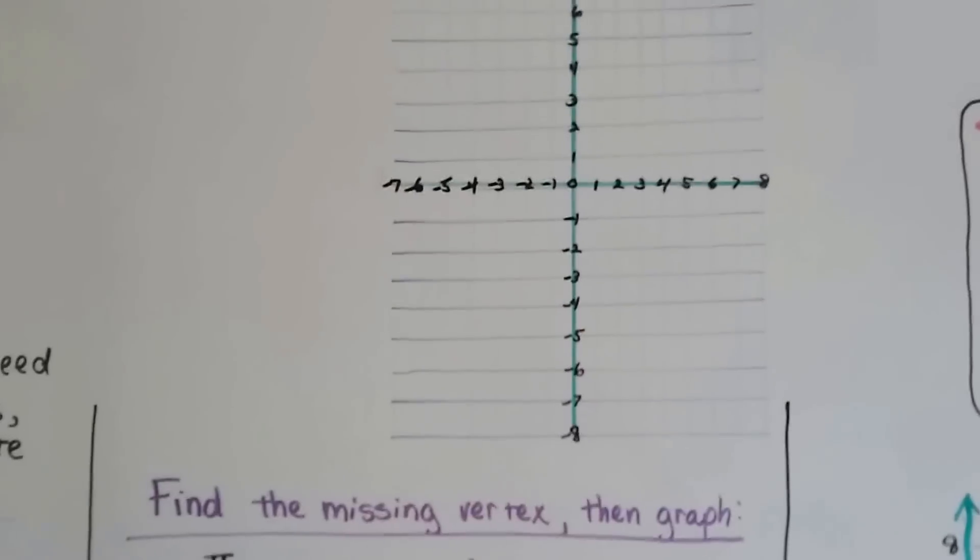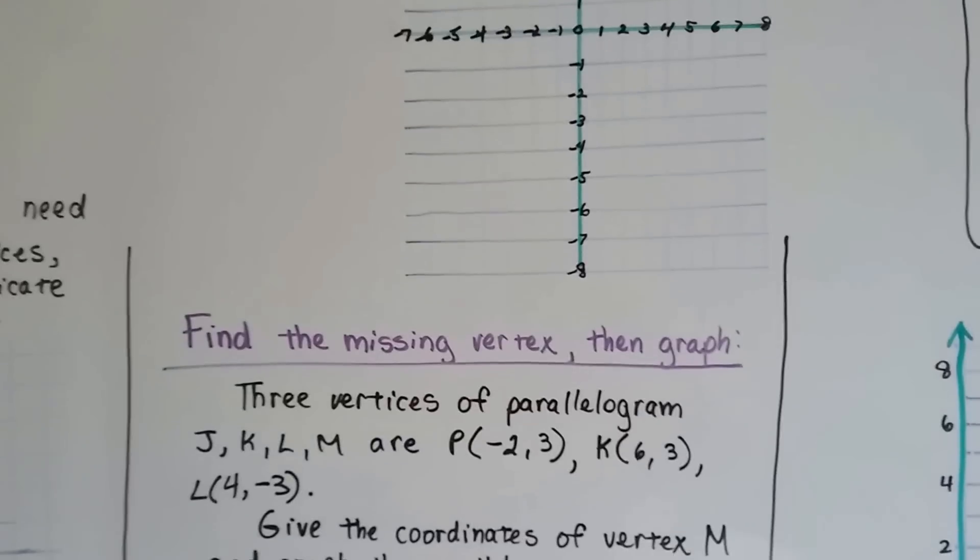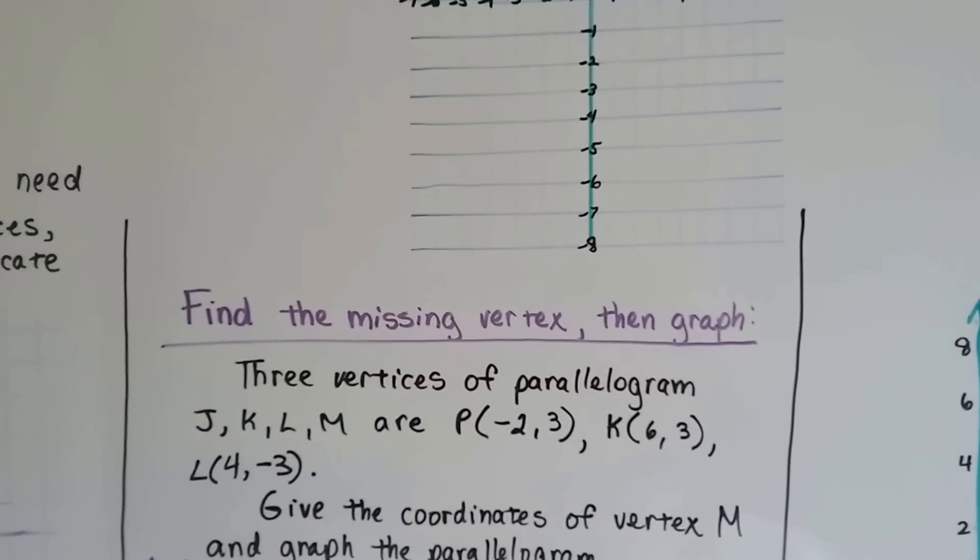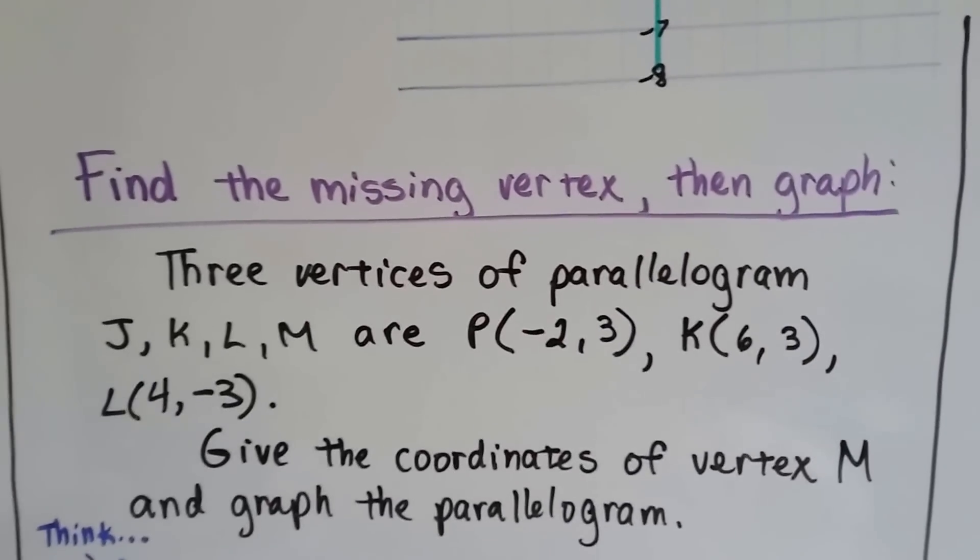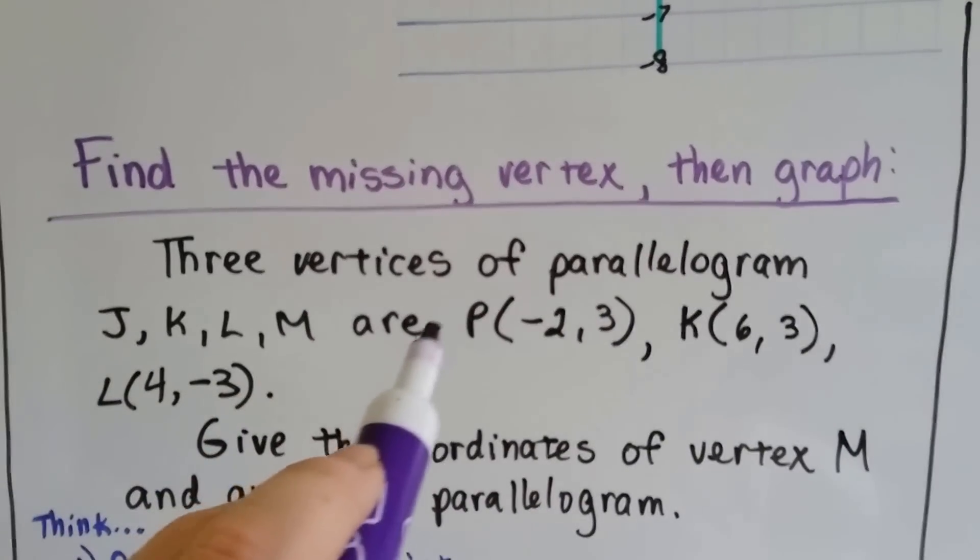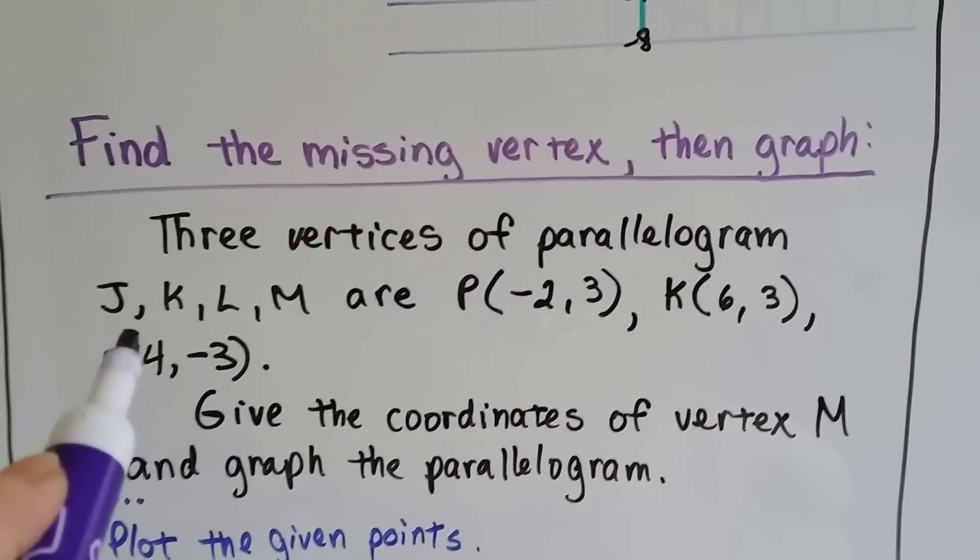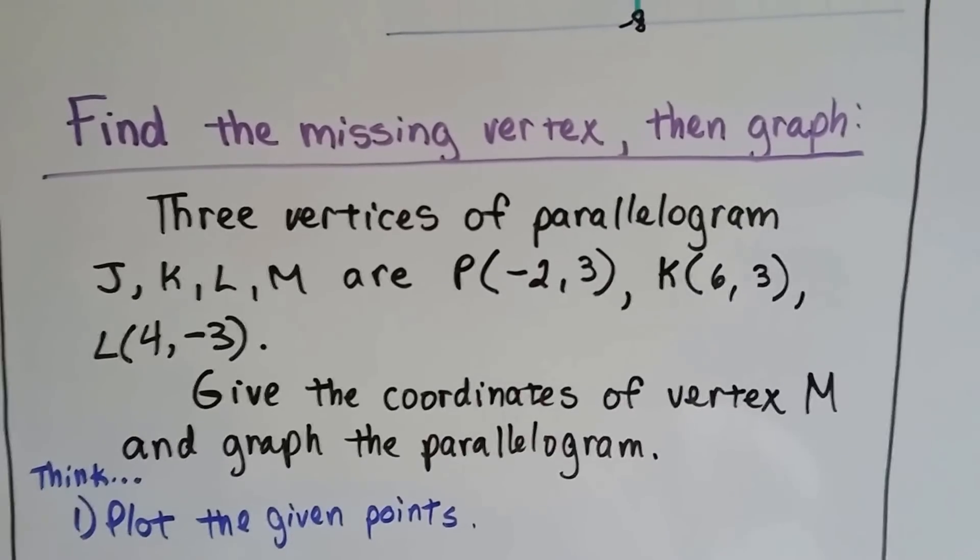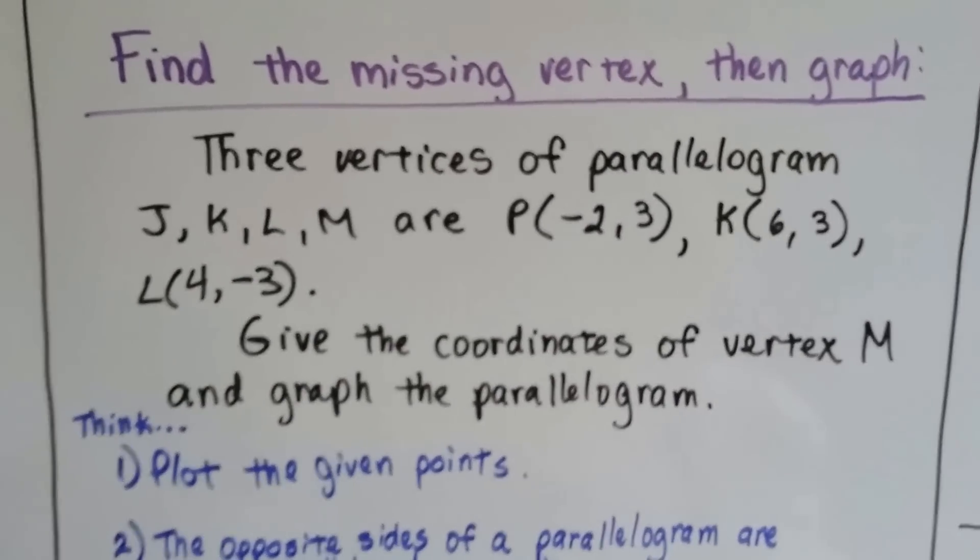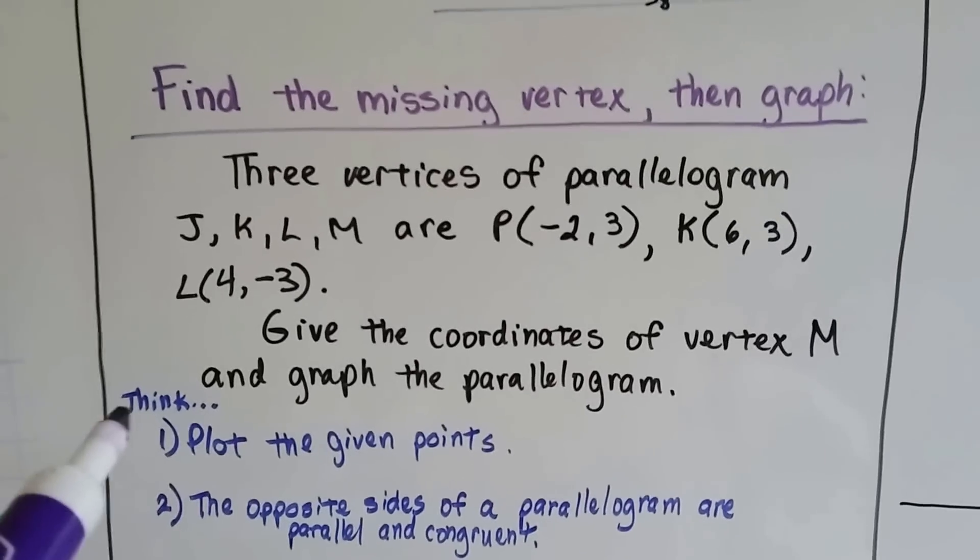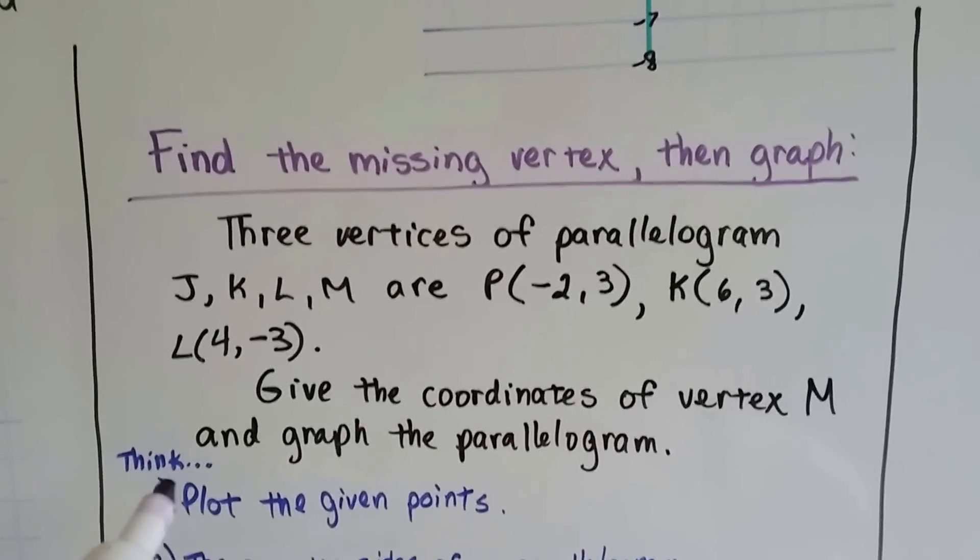Now, we've got one that looks like this, with the x and the y axis, and it says, find the missing vertex and then graph. Three vertices of parallelogram JKLM are J, negative 2, 3, K, 6, 3, L is 4, negative 3. Give the coordinates of vertex M, the missing one, and graph the parallelogram. So, we've got to think. The first thing we've got to do is plot the given points.